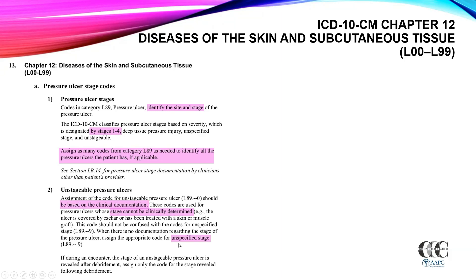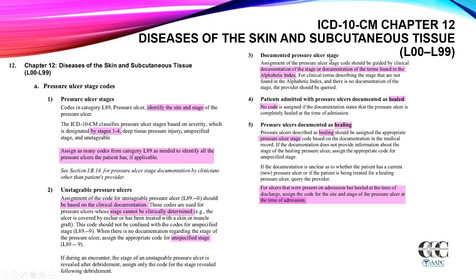Unspecified stage is simply where the provider hasn't documented the stage. Assign the pressure ulcer stage code guided by clinical documentation or documentation of terms found in the alphabetic index. For clinical terms describing the stage not found in the alphabetic index and with no documentation of the stage, the provider should be queried. If a patient is admitted with a pressure ulcer documented as completely healed, no code is assigned. If the documentation supports the pressure ulcer is healing, assign the appropriate pressure ulcer stage code; if no stage is documented, assign the appropriate code for unspecified stage.